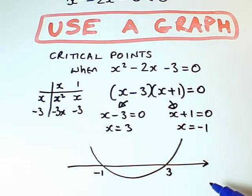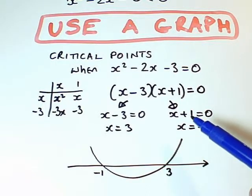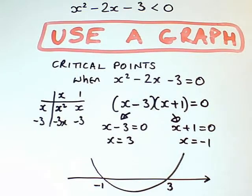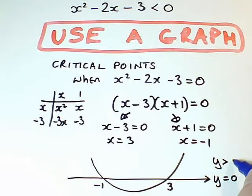And these values are going to be minus 1 and 3. And now I decide where I'm going to be. I want to be less than 0. So on the x-axis, y equals 0. Above the axis, y is greater than 0. And below it, y is less than 0.